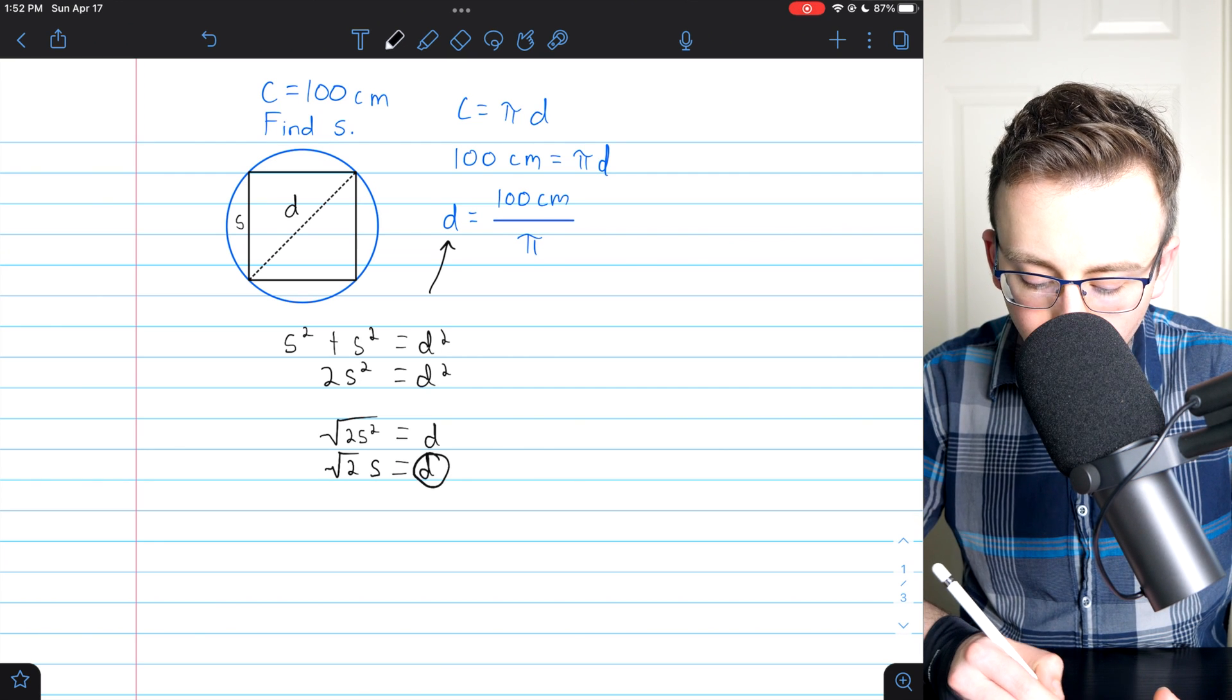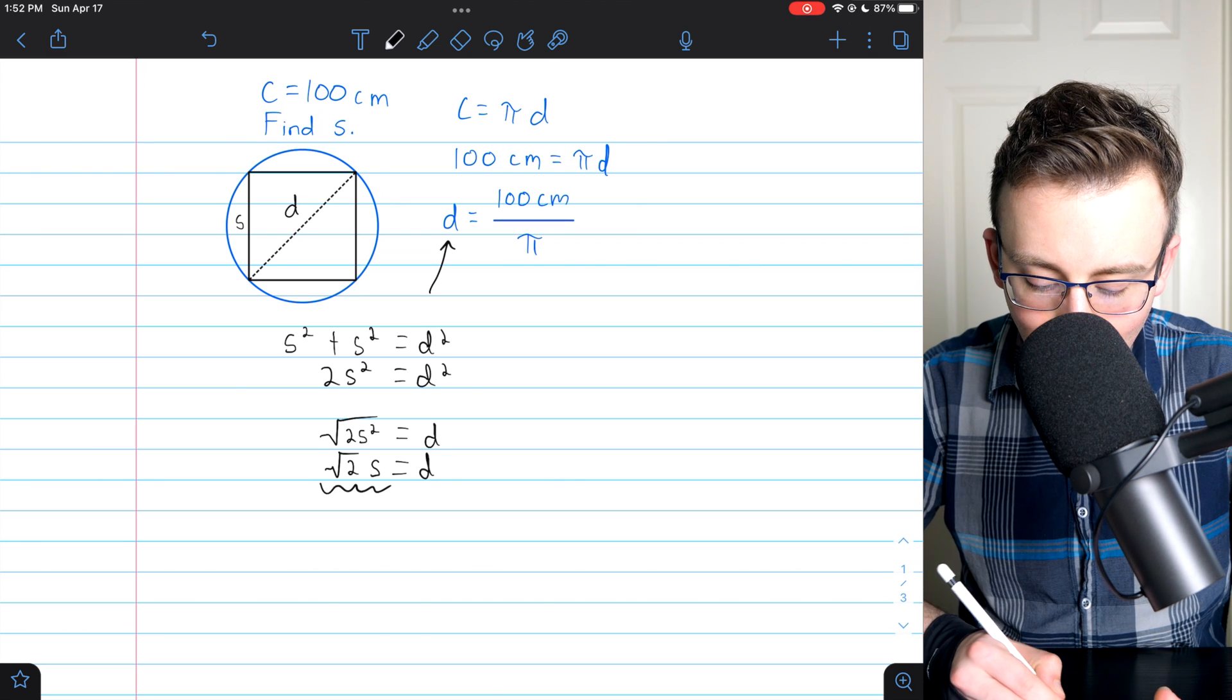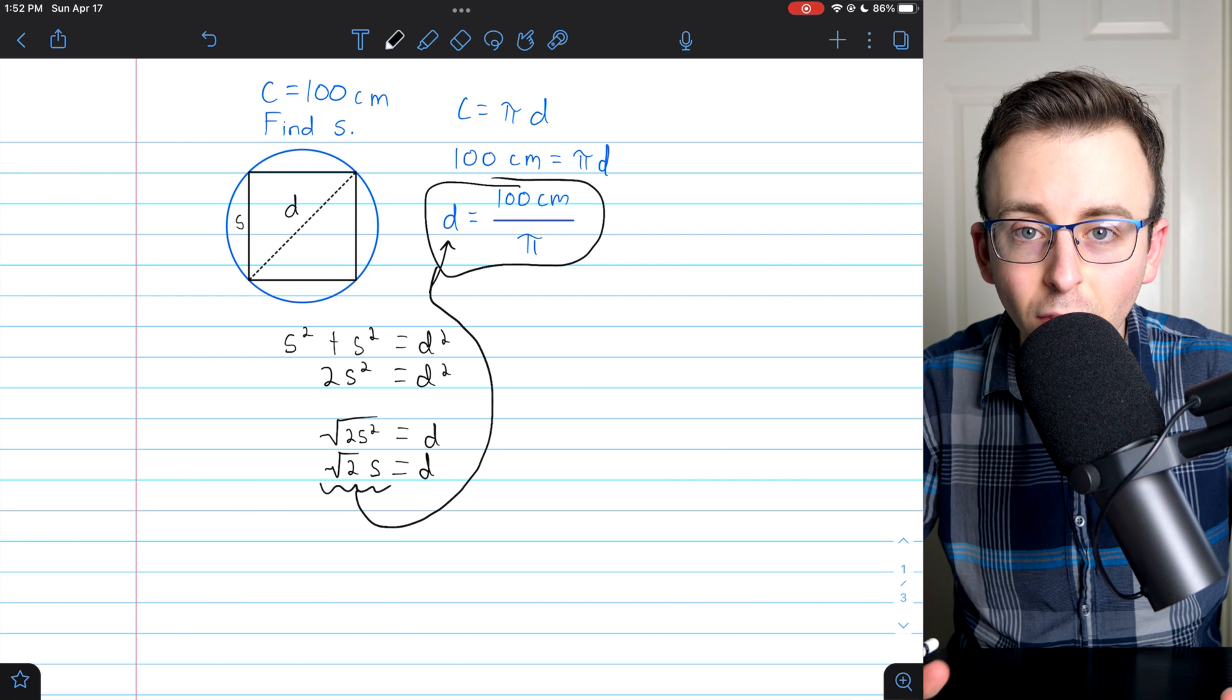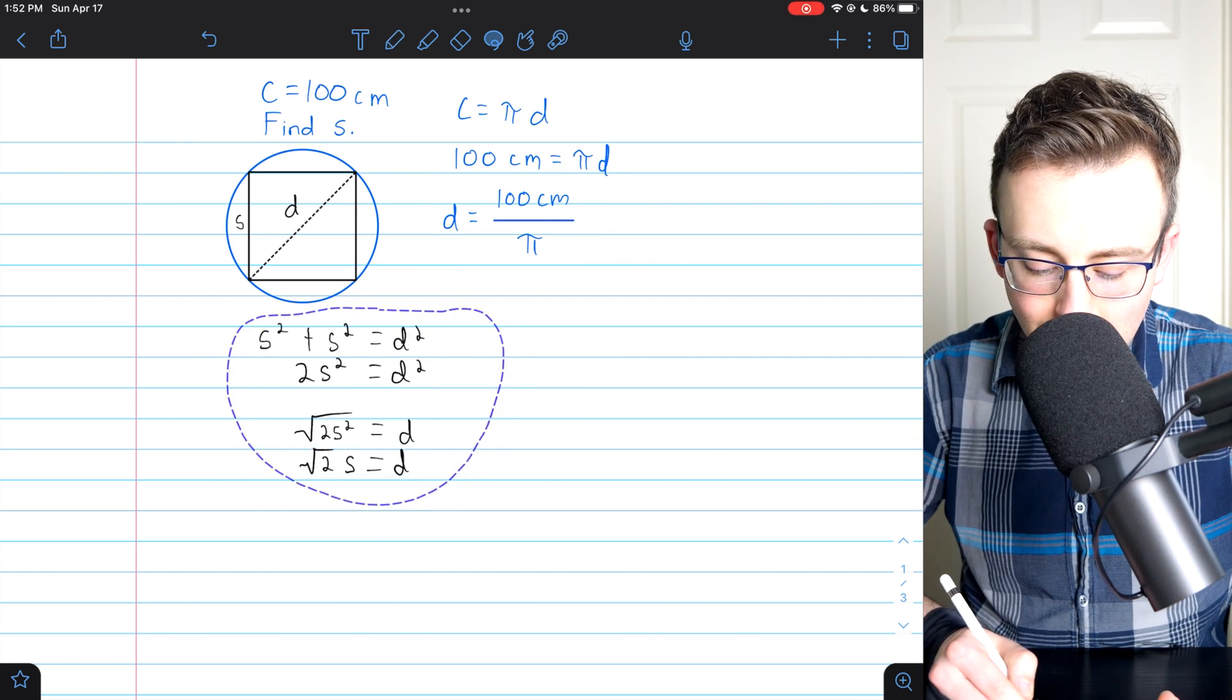Now that we've solved for d in terms of s, let's plug this back into the equation for the circle's diameter and finish solving for s, the side length. So we know that d, the diameter,